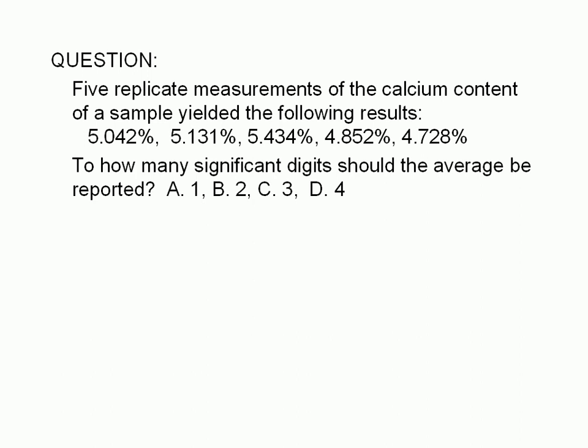Five replicate measurements of the calcium content of a sample yielded the following results: 5.042%, 5.131%, 5.434%, 4.852%, and 4.728%. To how many significant digits should the average be reported?